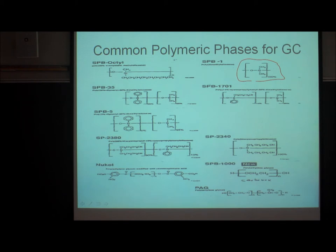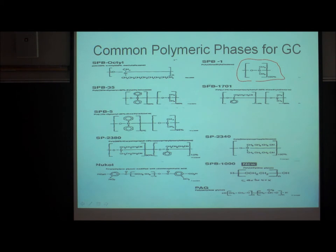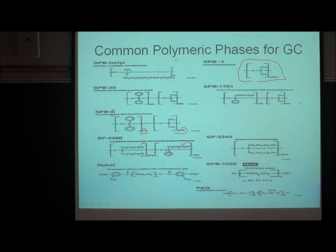Most of the other phases shown in the catalog are siloxanes where you leave one methyl group and substitute the other with a phenyl group, propyl group, cyanopropyl group, and so on. For example, one phase is diphenyl-dimethyl siloxane — you can vary the proportions, such as 5% diphenyl, 95% dimethyl, up to completely diphenyl. You can also make cyanopropyl-phenyl or dicyanopropyl variants. The number of combinations is almost infinite.